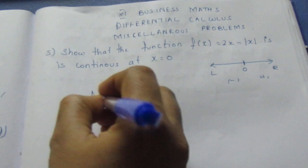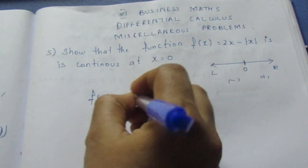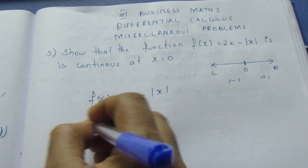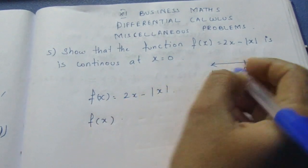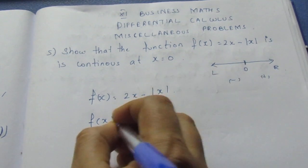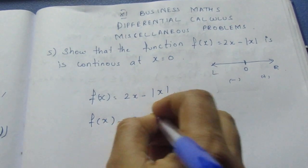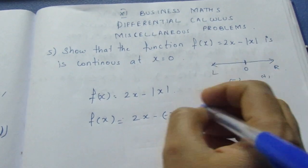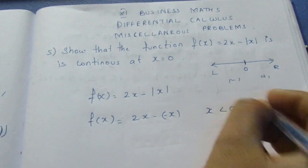f(x) = 2x - |x|. So we need f(x). x can be negative when x is less than 0.